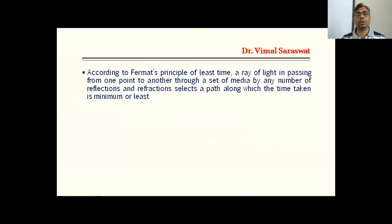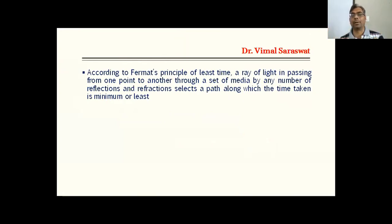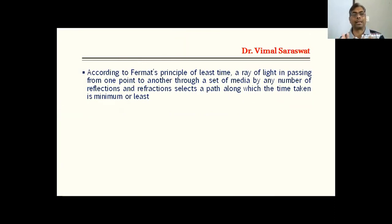According to Fermat's Principle of Least Time, if a ray of light passes from one point to another through a set of media by any number of reflections and refractions, it selects a path along which the time taken is minimum or least.